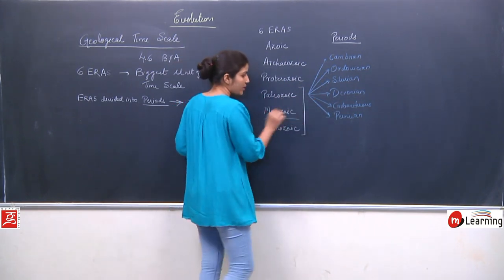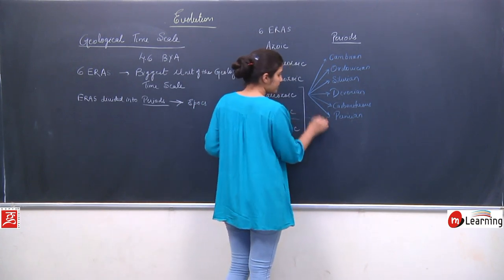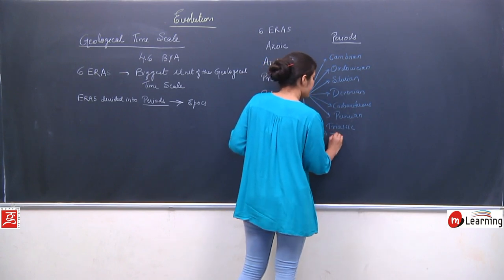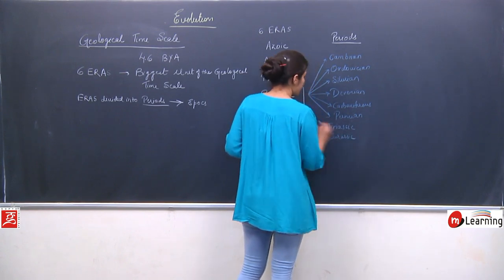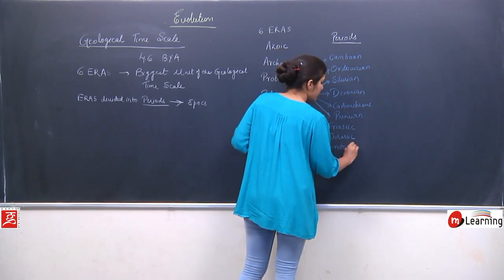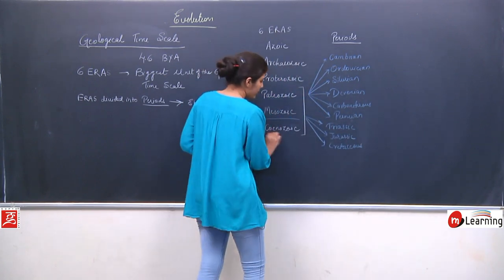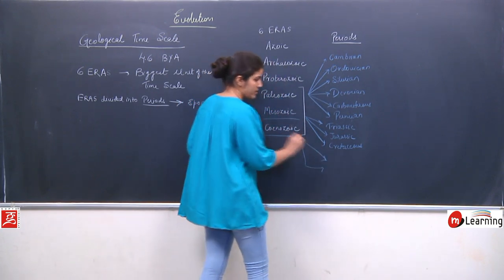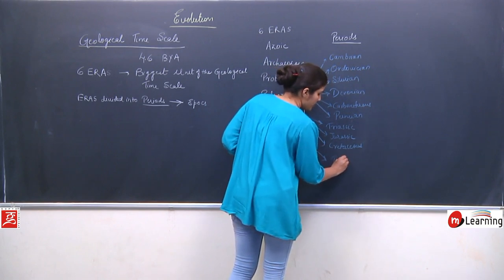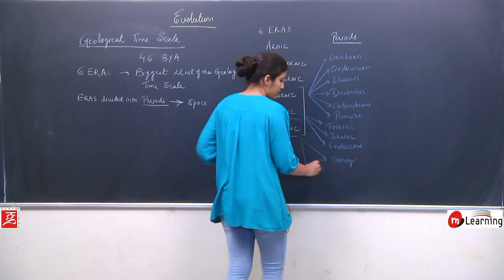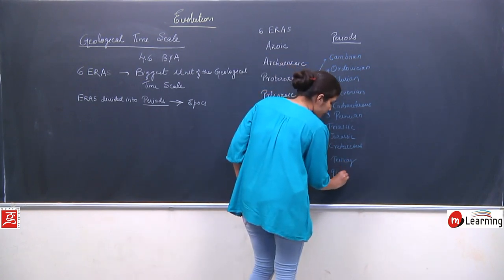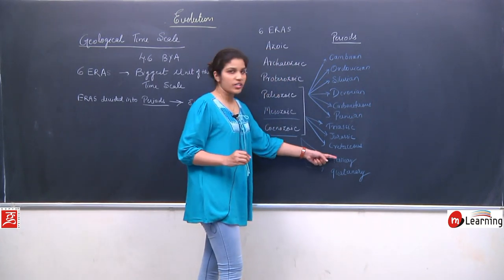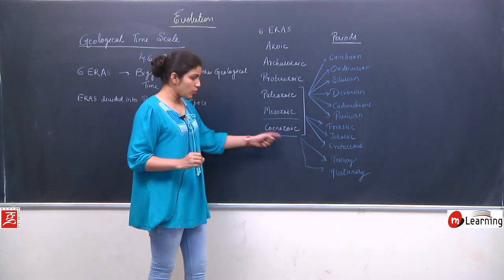The periods of the Mesozoic era are Triassic, Jurassic, and Cretaceous. The Cenozoic era has been divided into only 2 periods — Tertiary and Quaternary — which belong to the Cenozoic era.